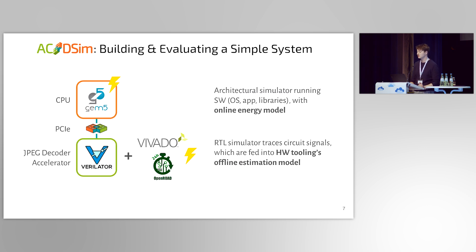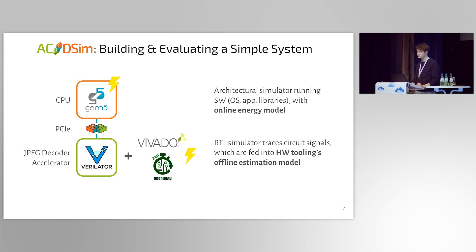Let's have a closer look at evaluating a simple system made up of a CPU with a hardware accelerator attached over PCI Express. The CPU is simulated by the architectural simulator GEM5, and it runs the OS, libraries, and the workload application. The hardware accelerator on the other side is simulated by a cycle-accurate RTL simulator. Here, I'm using the example of a JPEG decoder, but you can simulate anything for which you have the RTL code. The PCIe connection connecting the two is taken care of by Simpricks.